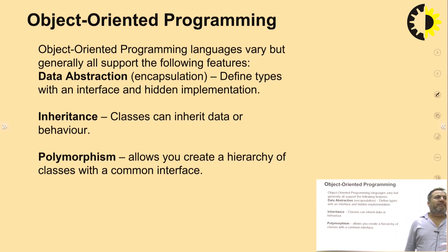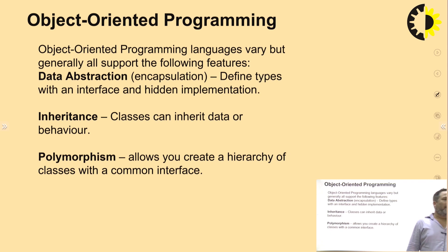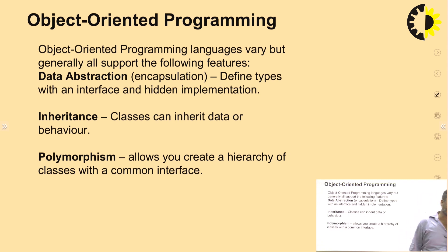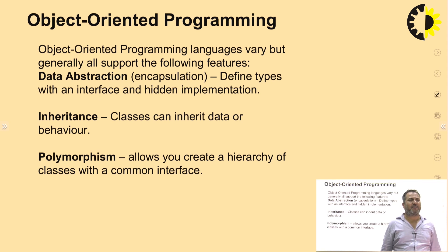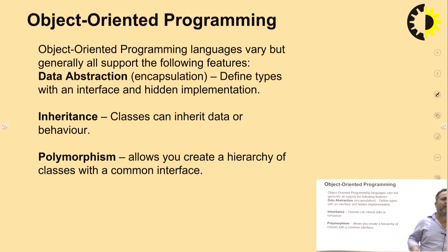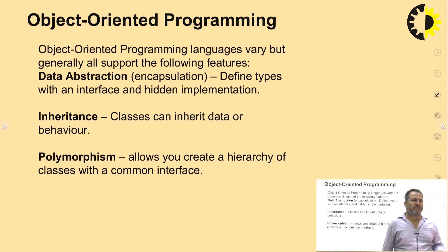The main properties of object-oriented programming are: data abstraction, which is called encapsulation, inheritance, and polymorphism. Other features like class and object are somehow related to abstraction, inheritance, or polymorphism.